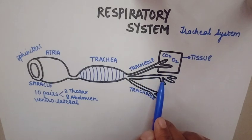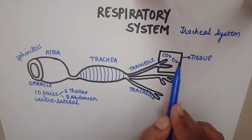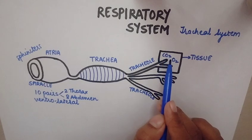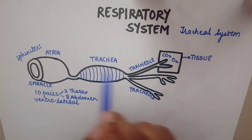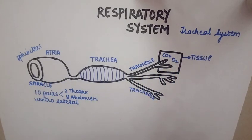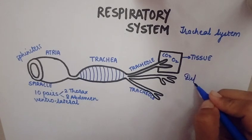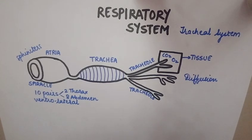The tracheoles end directly into the tissue. All the tracheoles are directly connected with the particular tissue of the cockroach, so the tissue directly exchanges gases with the surrounding — releasing carbon dioxide and taking in oxygen. This exchange takes place by diffusion, which is passive transport without the expenditure of energy or ATP.